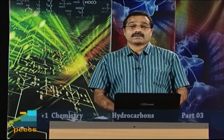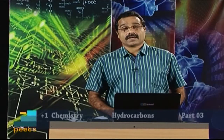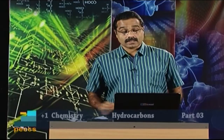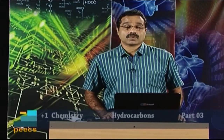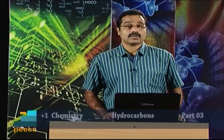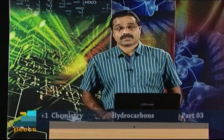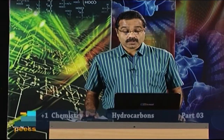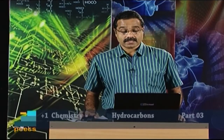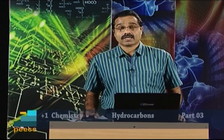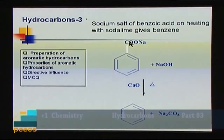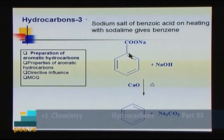How can we prepare benzene and other aromatic hydrocarbons? When a sodium salt of an acid is treated with soda lime, it undergoes decarboxylation to form hydrocarbons. Sodium benzoate — the sodium salt of benzoic acid — when treated with sodium hydroxide and calcium oxide (soda lime), the carboxyl group is removed and we get the corresponding hydrocarbon. So sodium benzoate is converted to benzene.